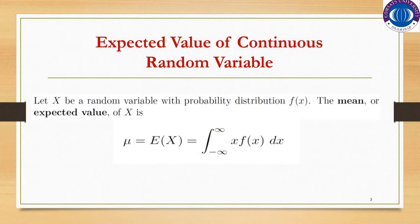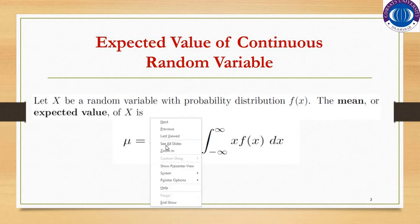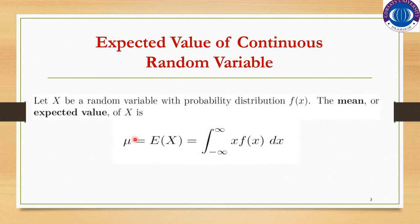Expected value of continuous random variable. Let x be a random variable with probability distribution f of x. The mean or expected value of x is mu. Mu is the Greek letter we use for representing the population mean. Mu is equal to the expected value of x, which is the integral from minus infinity to infinity of x times f of x dx.